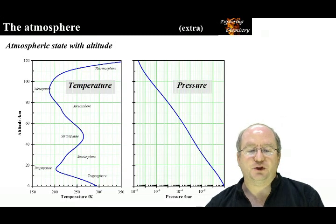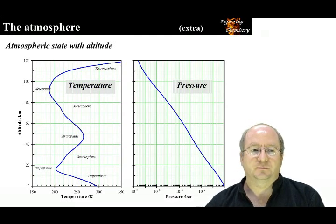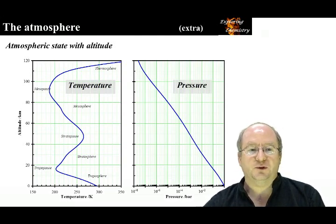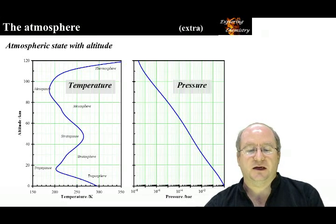The temperature profile has several maxima and minima. Heating of the atmosphere is due solely to absorption of solar radiation. The stratosphere is where the ozone layer exists, which absorbs ultraviolet radiation. The thermosphere absorbs X-rays emitted from the sun.